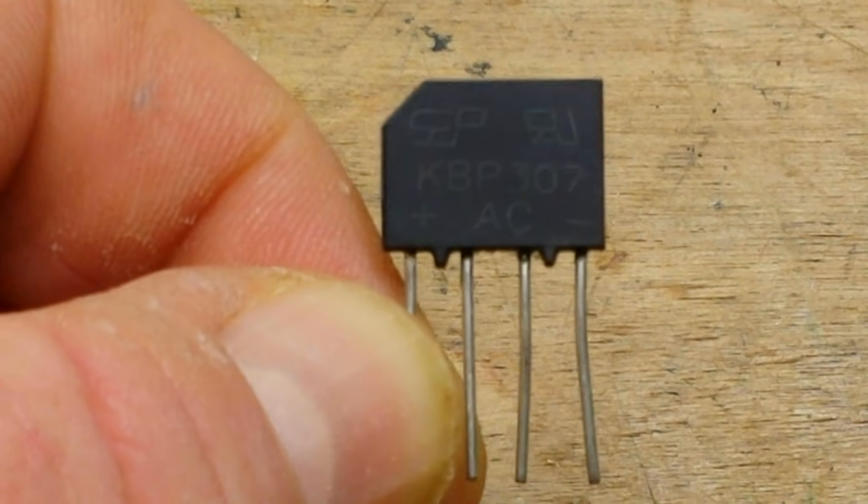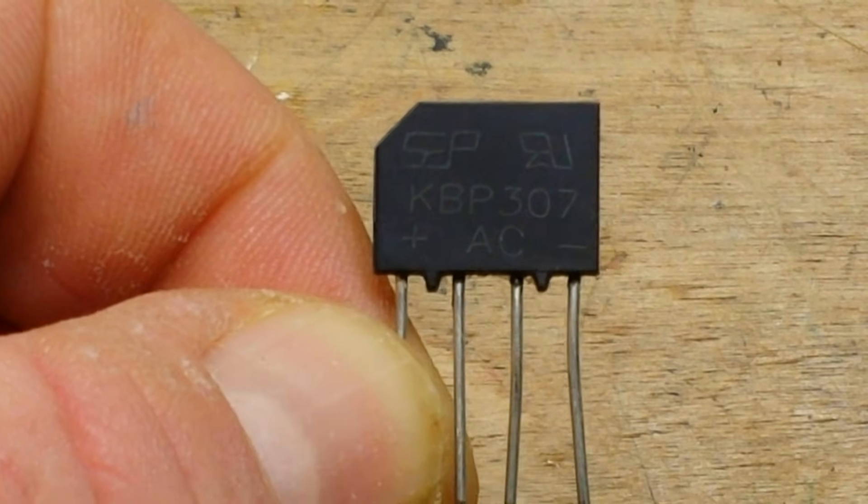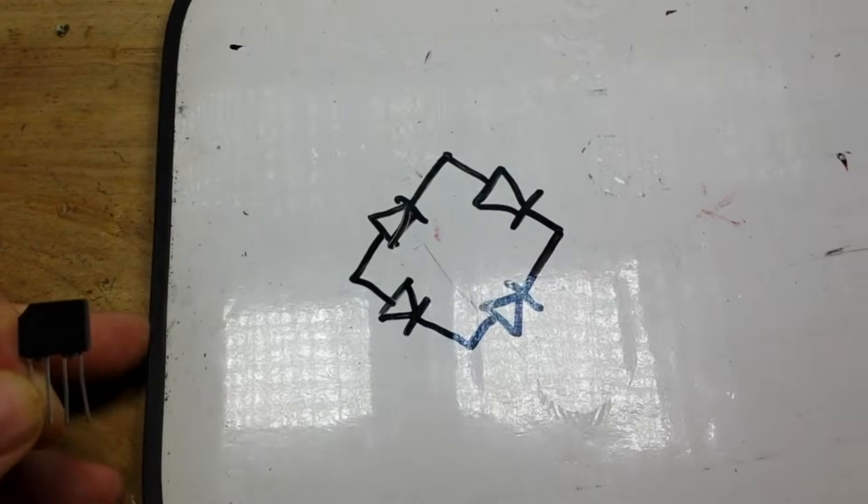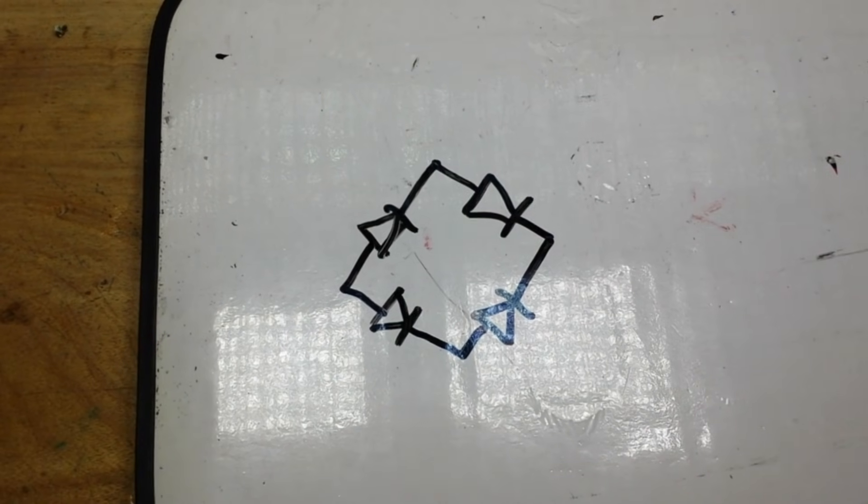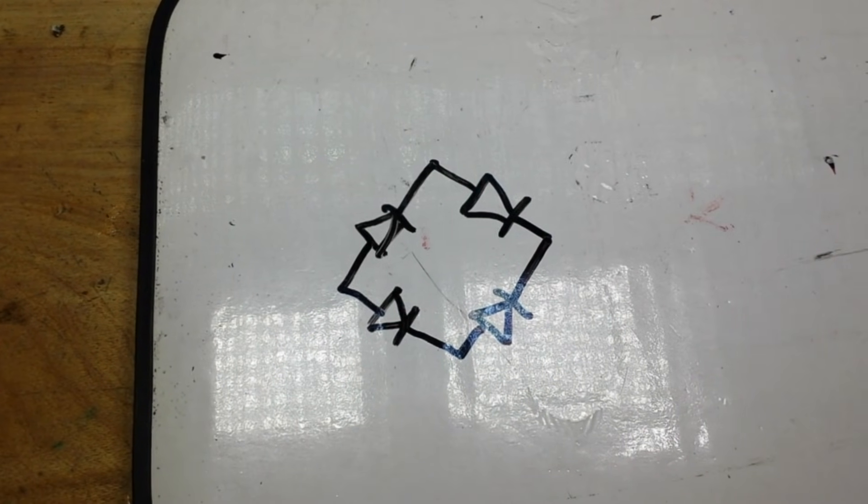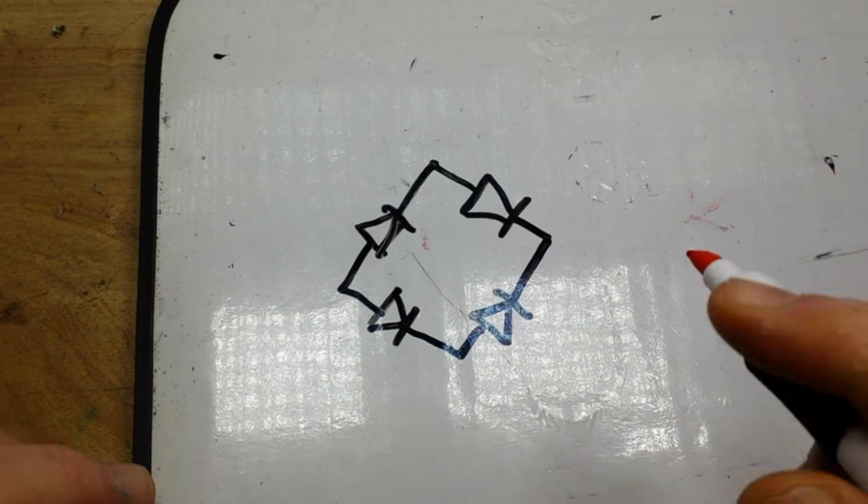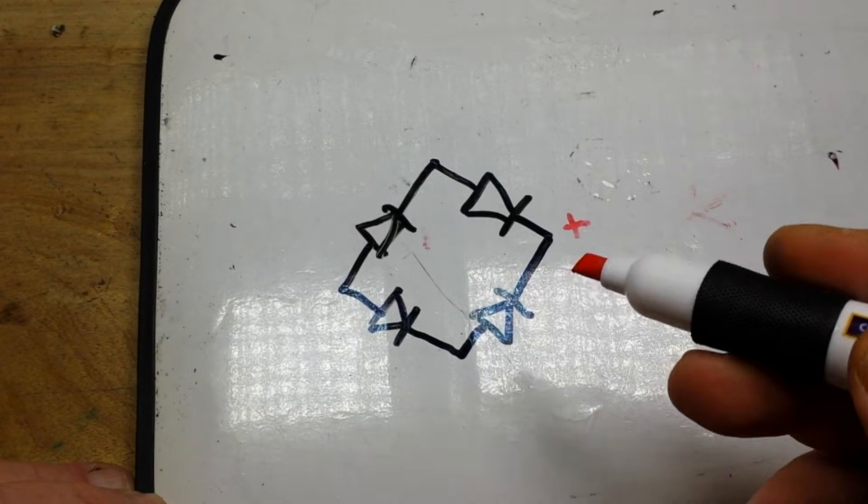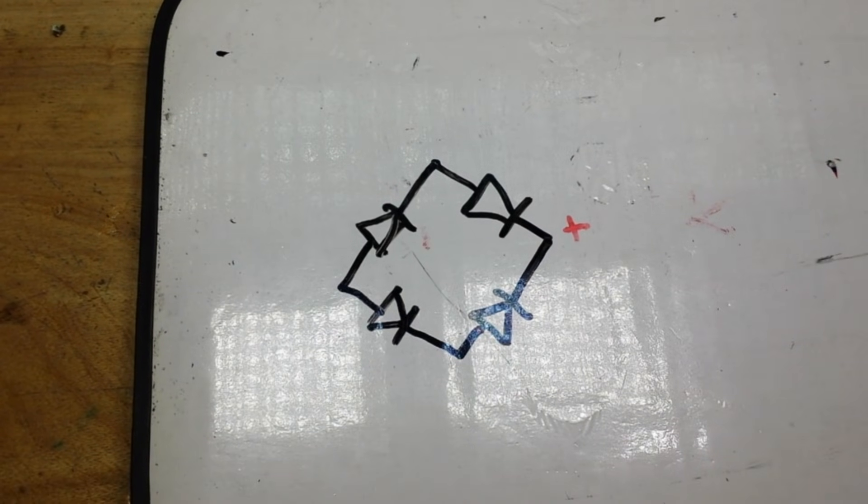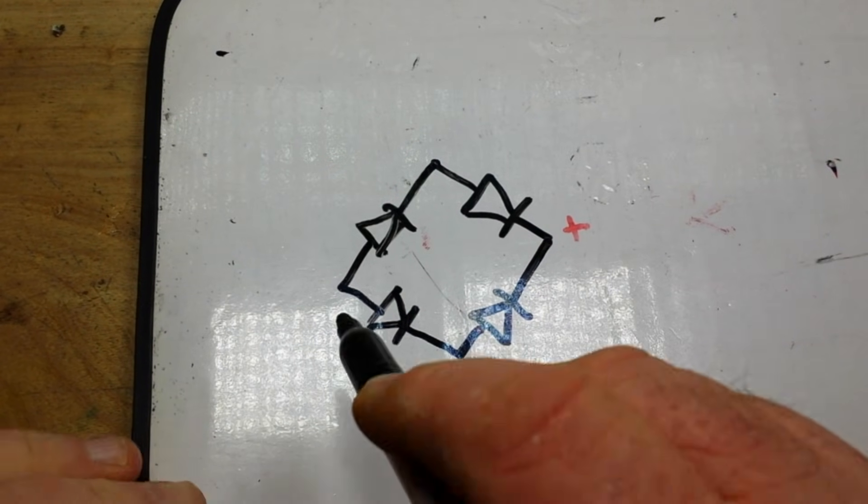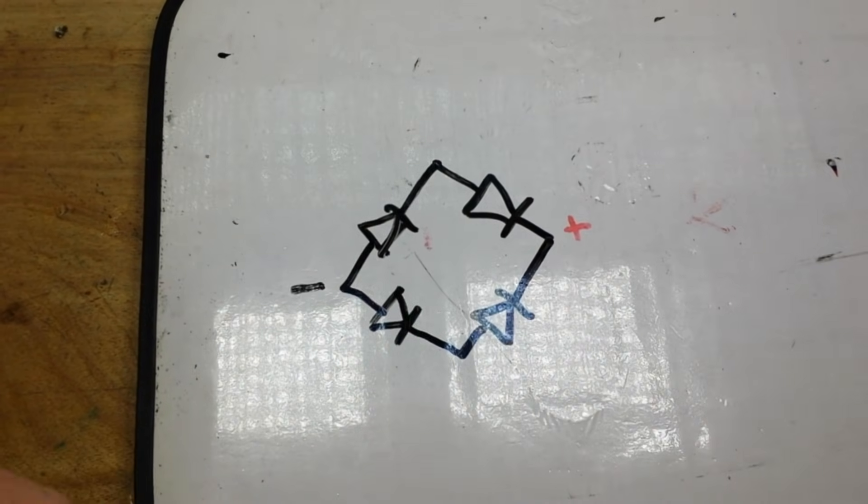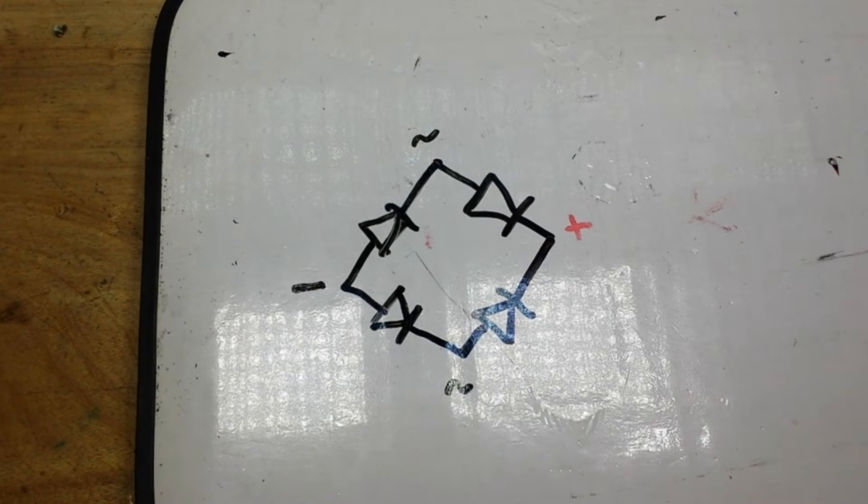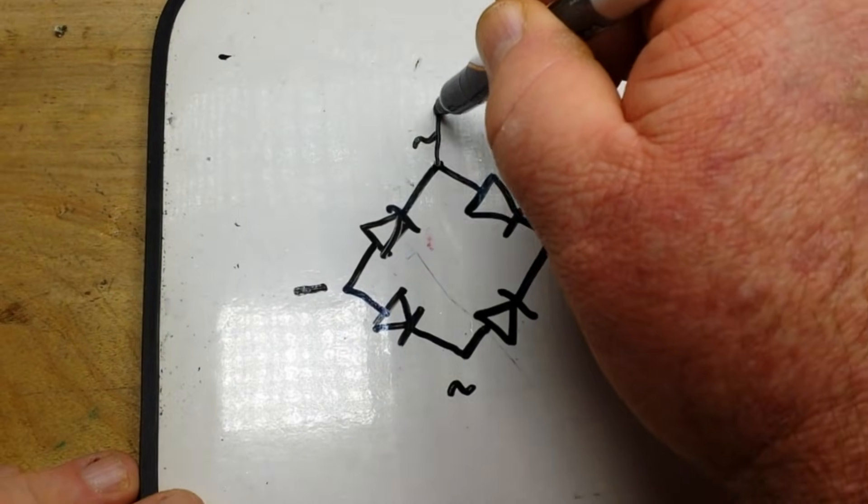So the first thing you need to know is what is a bridge rectifier. I'm sure most of you already know, but if you don't it's basically four diodes like this. This is our plus - look at that beautiful red marker - this is the minus, and then these two here are our AC inputs.